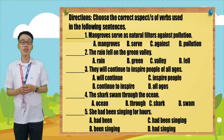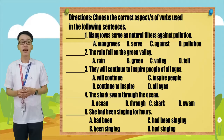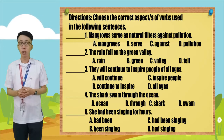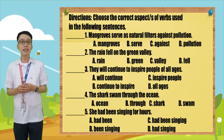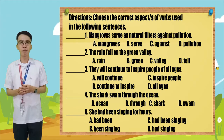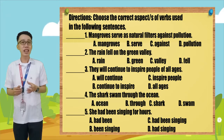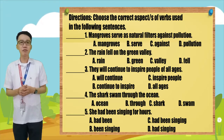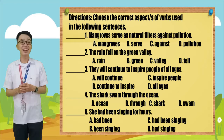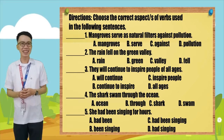Number four: The shark swung through the ocean. A. Ocean. B. Through. C. Shark. D. Swung. And number five: She had been singing for hours. A. Had been. B. Been singing. C. Had been singing. D. Had seen.